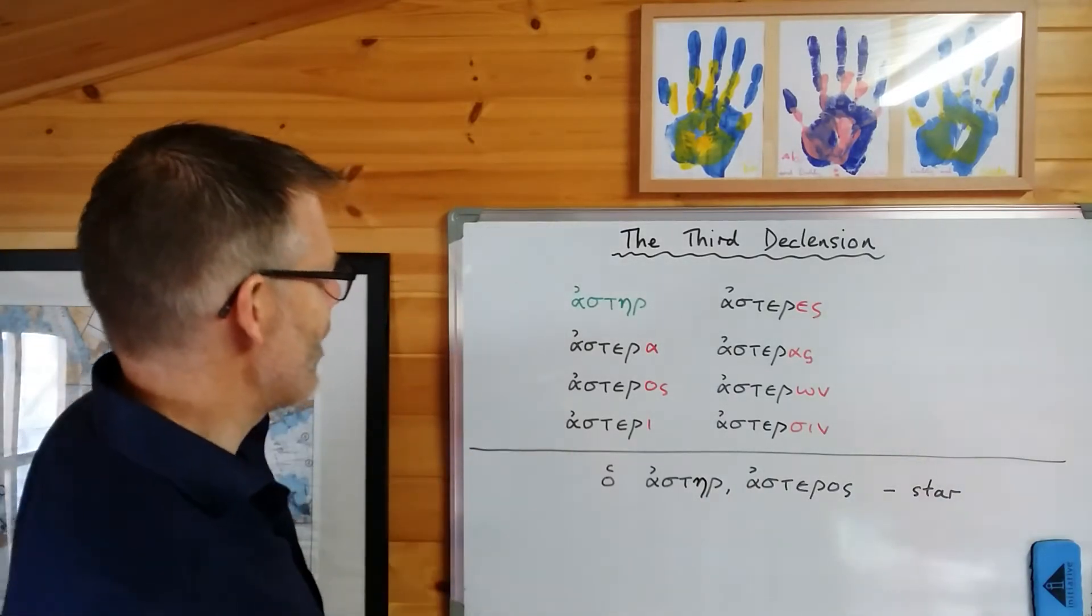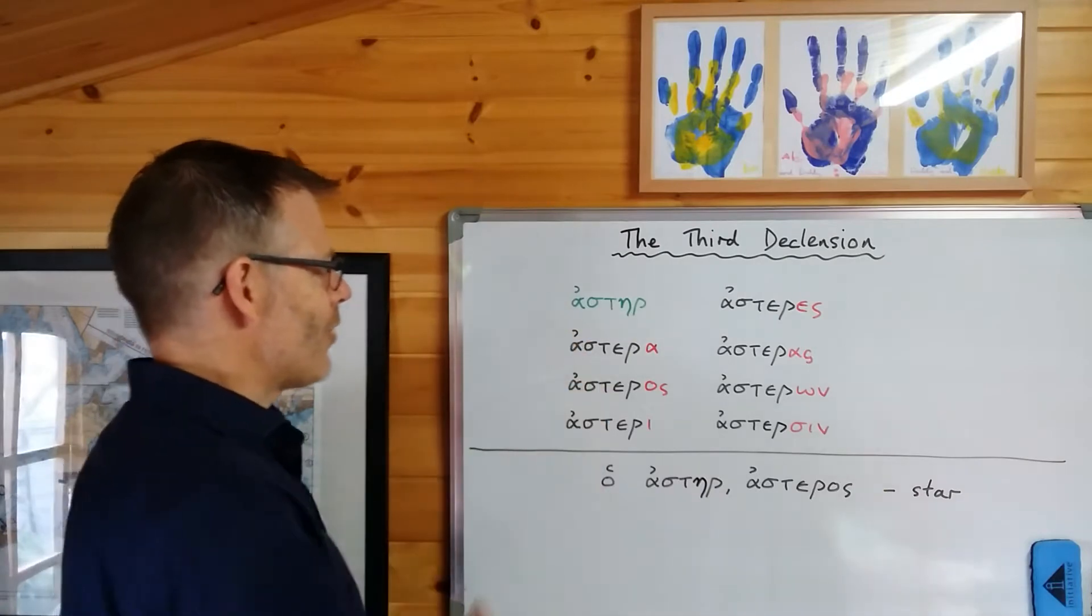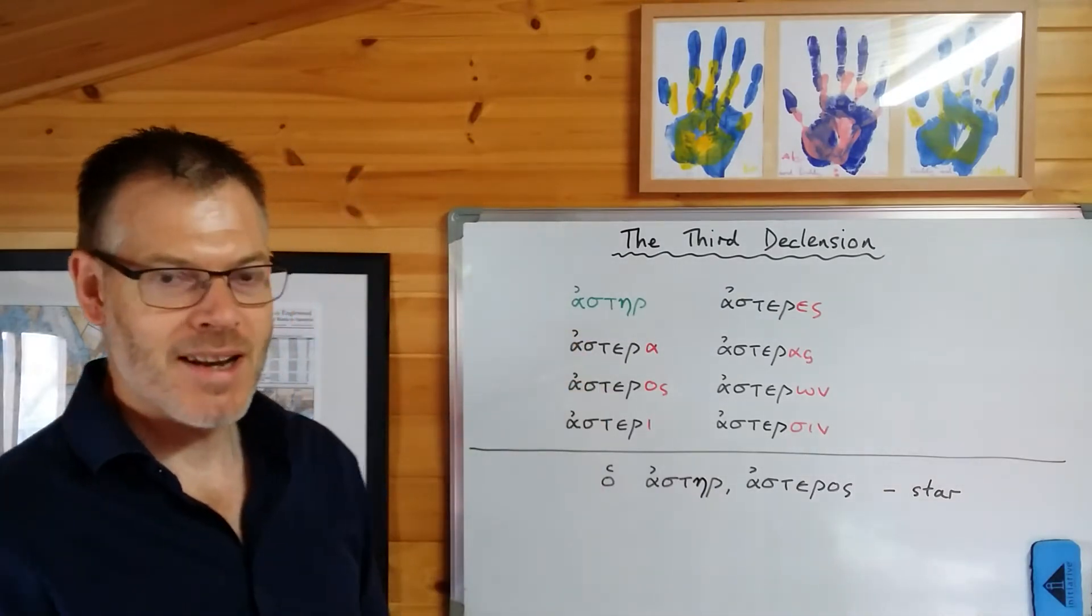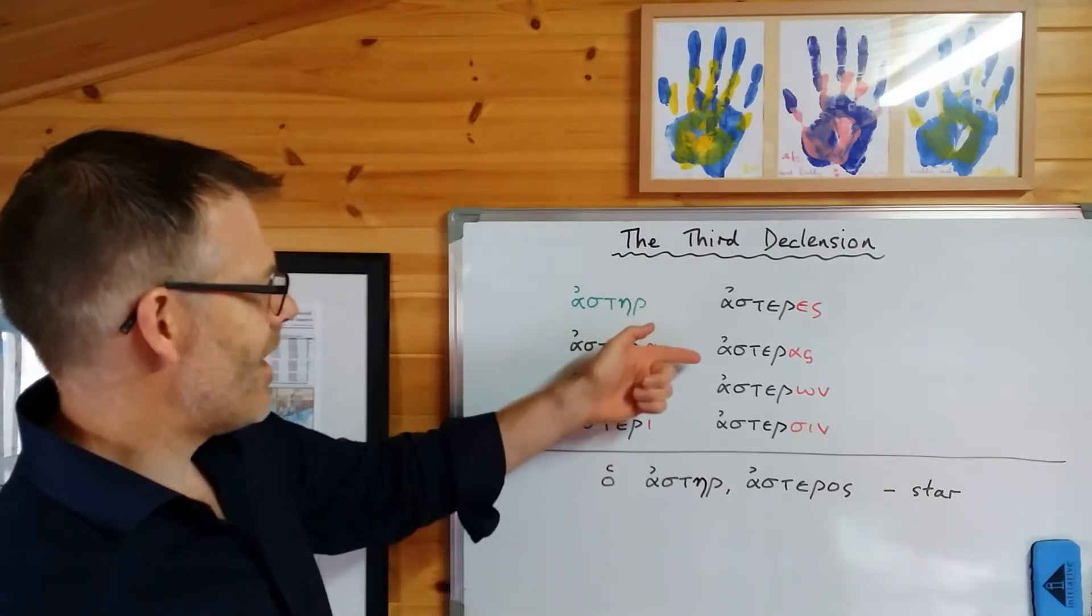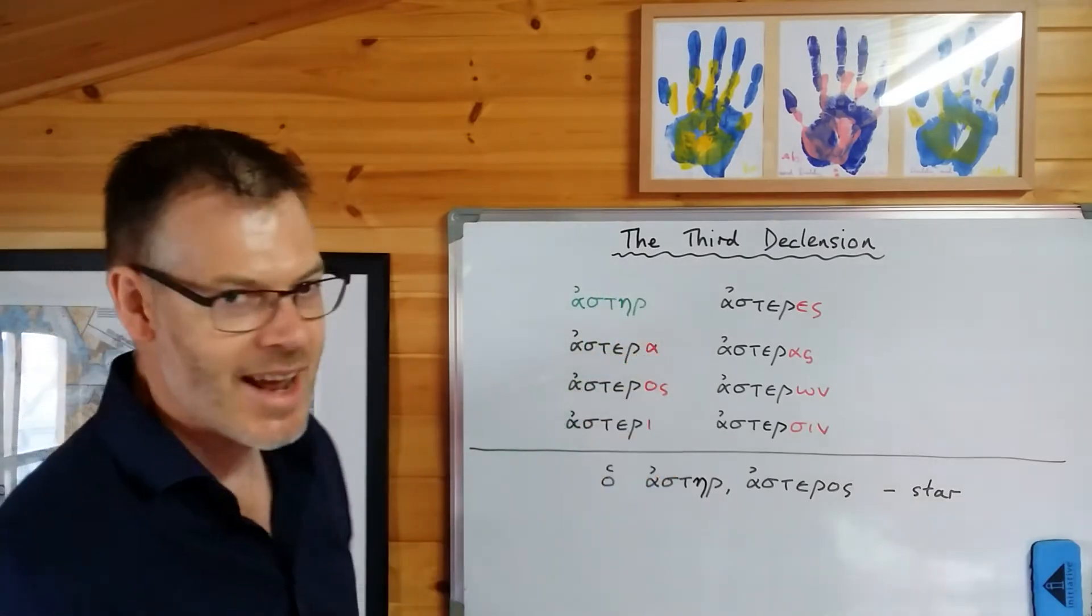Here is the full declension of the Greek word aster, meaning a star. Aster, asterat, asteros, asteri, asteres, asteres, asteron, astersin.